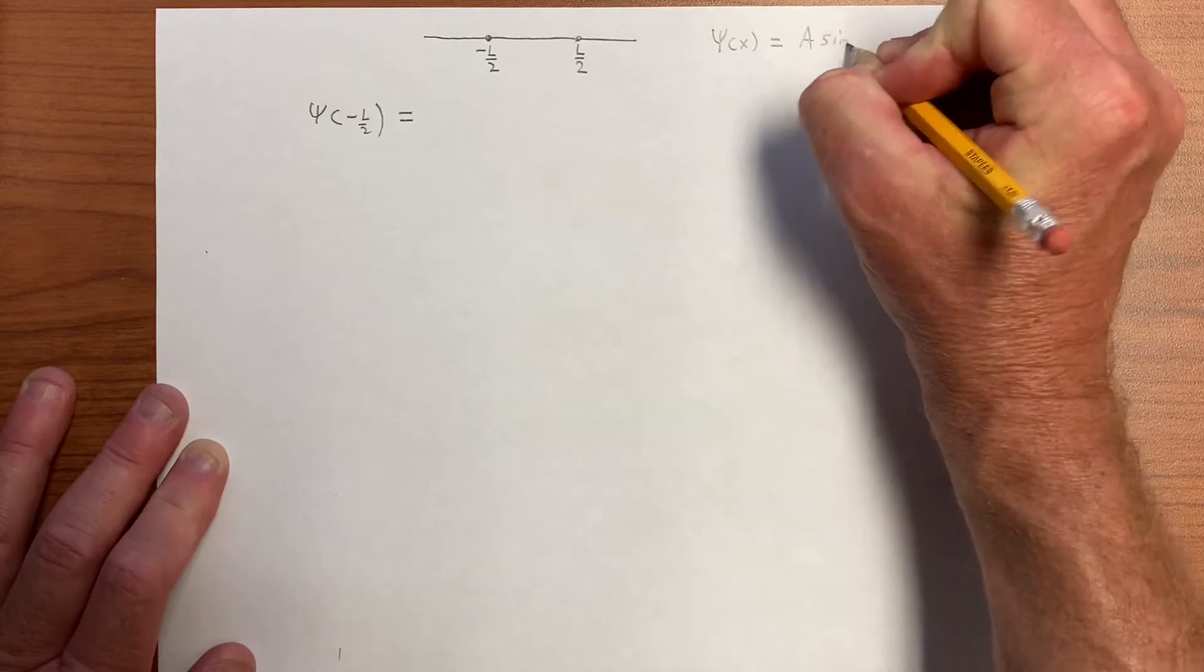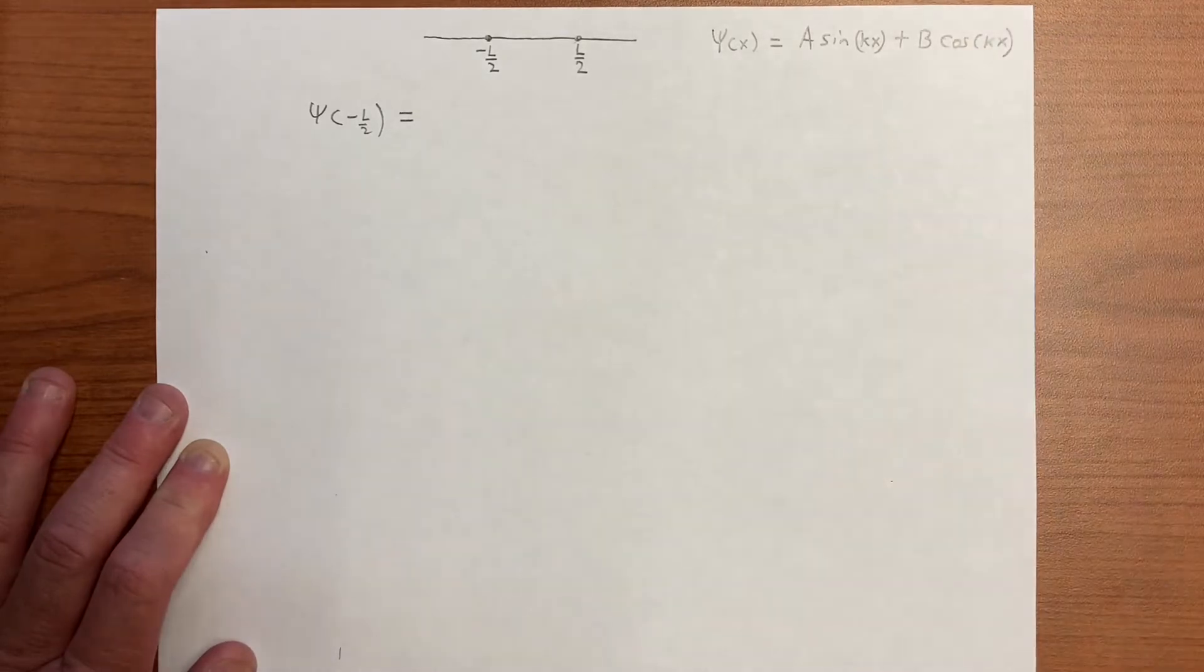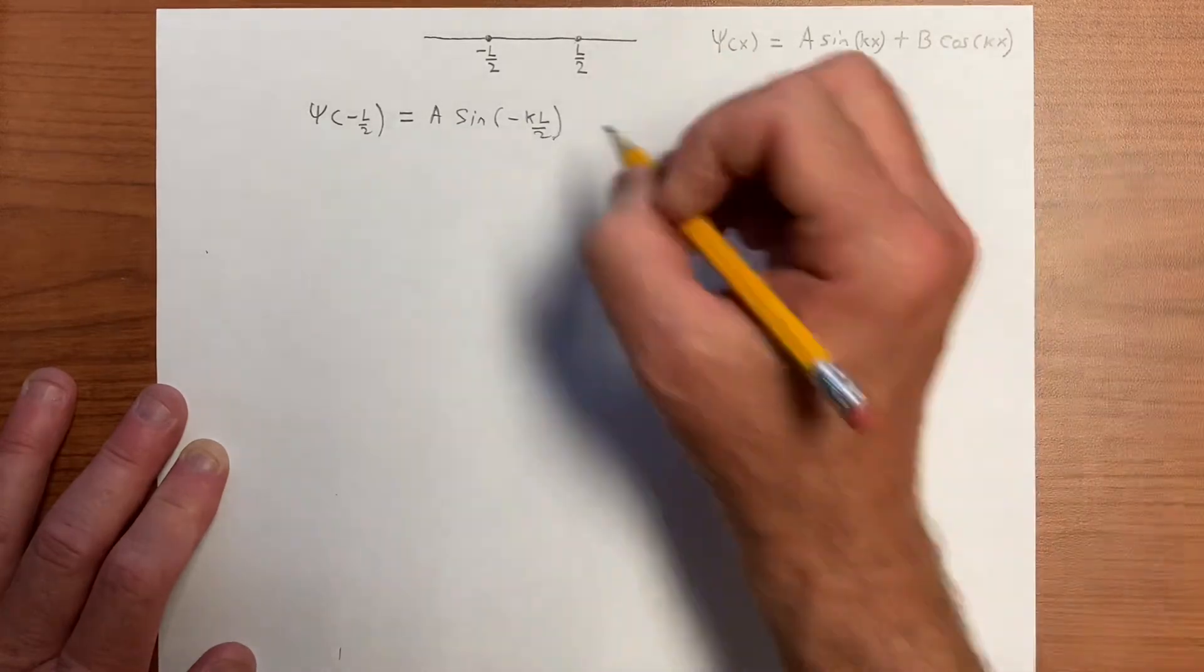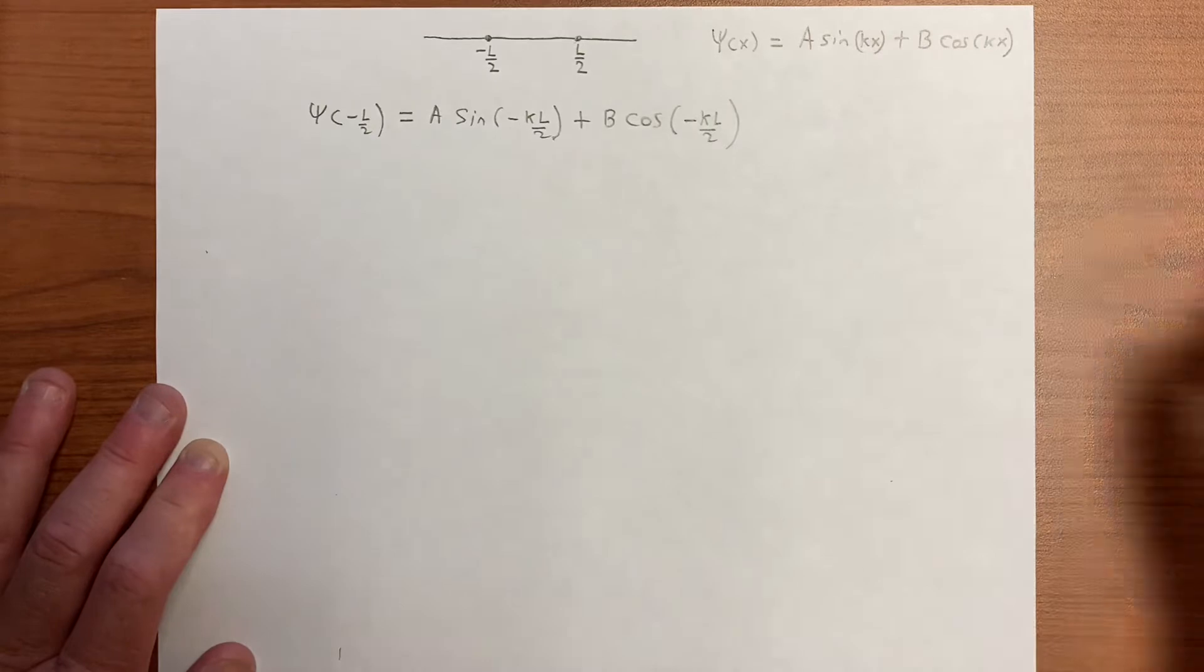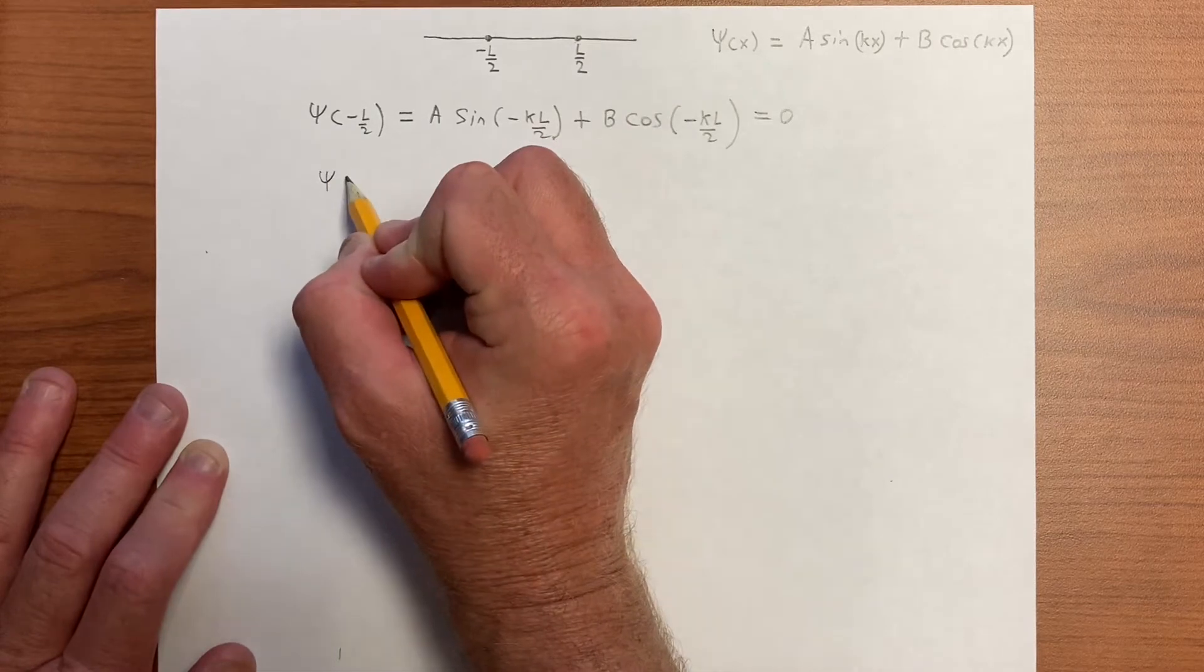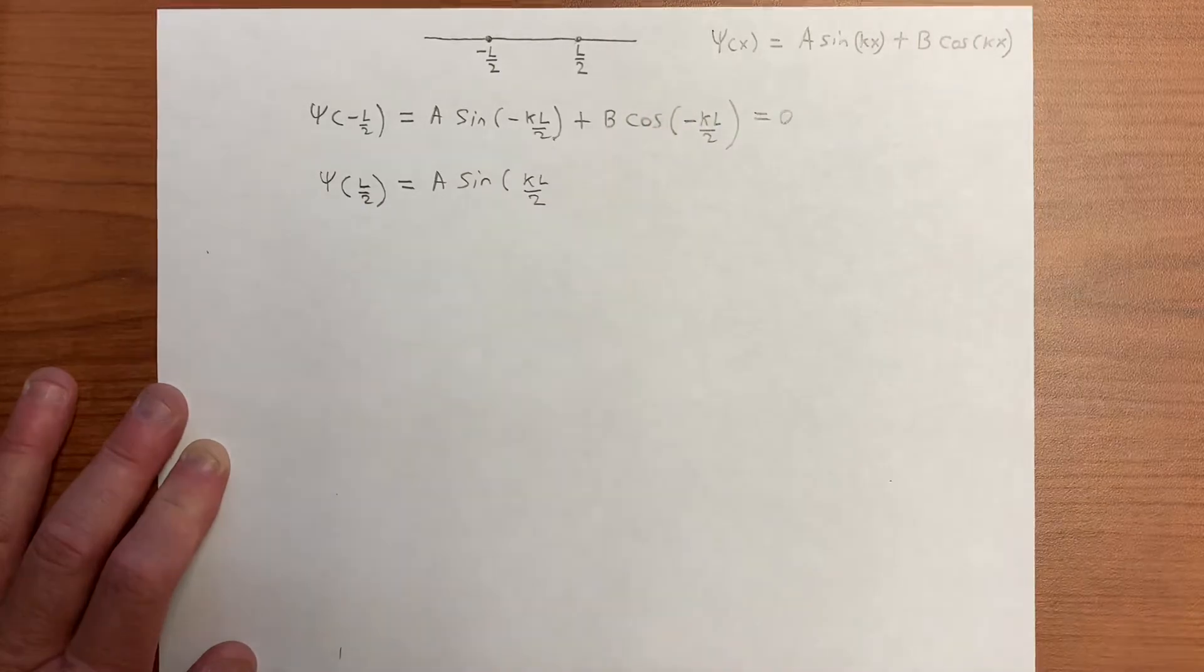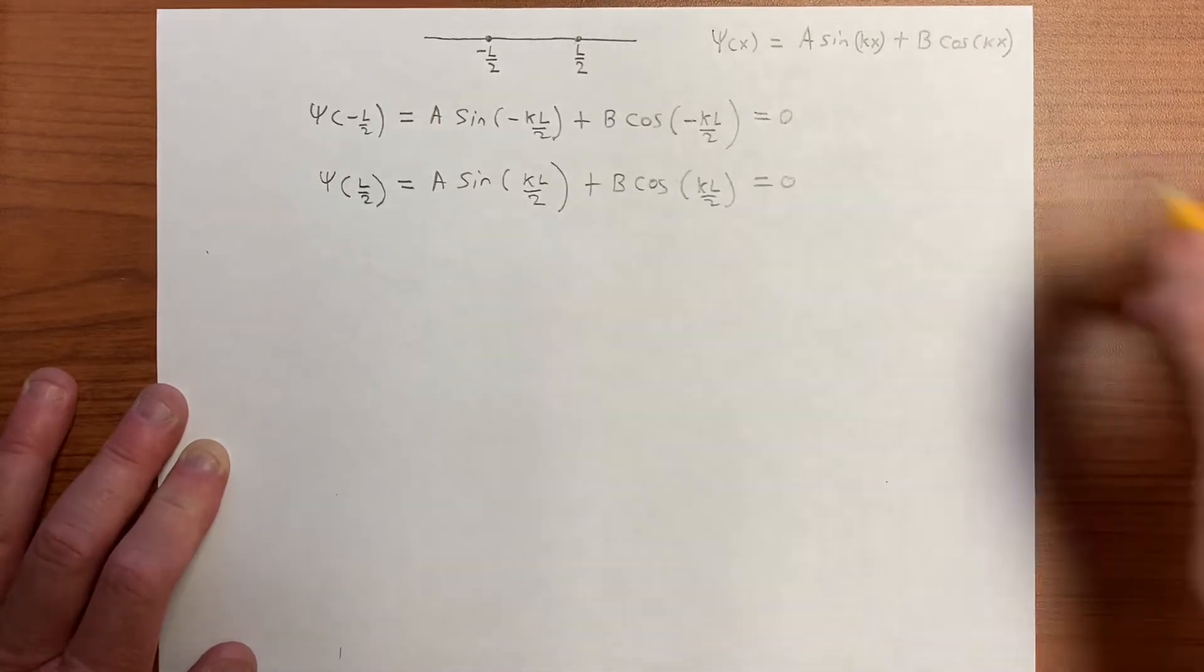We have something like A sine of kx plus B cosine of kx. And the boundary condition then gives us A sine of minus kL over 2 plus B cosine of minus kL over 2, that has to be equal to 0. And of course, the function has to die at L over 2 as well. So psi of L over 2, which is A sine of kL over 2, plus B cosine of kL over 2, has to be equal to 0.